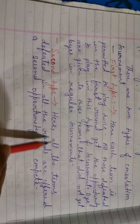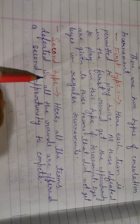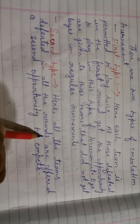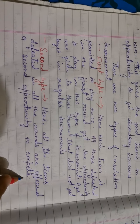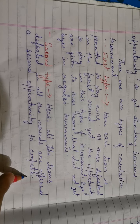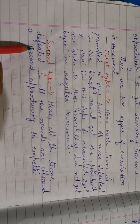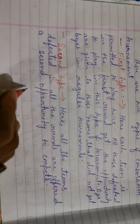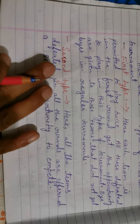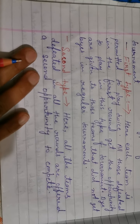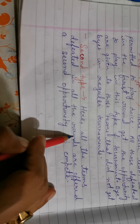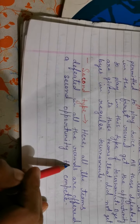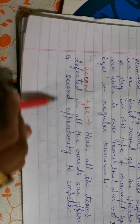In the second type, all the teams defeated in all the rounds are offered a second opportunity to compete. This means teams defeated in the first round, second round, third round — all of them get another chance.